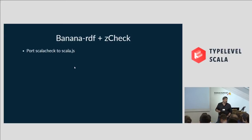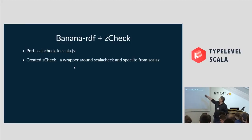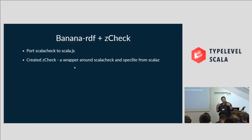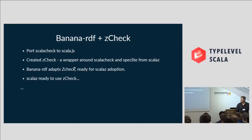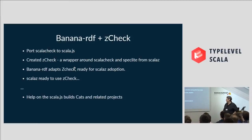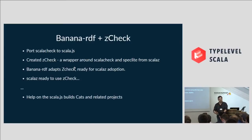I ported ScalaCheck to Scala.js — that was the first job. Created ZCheck, which was a wrapper around ScalaCheck and spec-like from ScalaZ, with the goal of saying: that's what was holding ScalaZ back. Therefore we're in a position where ScalaZ could use this plugin to cross-compile. We got ZCheck working in Banana RDF so it didn't get in the way of ScalaZ — they could just carry on working. Then ScalaZ was ready to use ZCheck, and what happened next? The winter of discontent, and CATS was born. CATS didn't have Scala.js either. So then we just helped out — we said, look, we want to use this project and all its lower-level projects. You're interested in category theory, we just want to use it, we'll help you out. That's what a community does. Everyone wins.